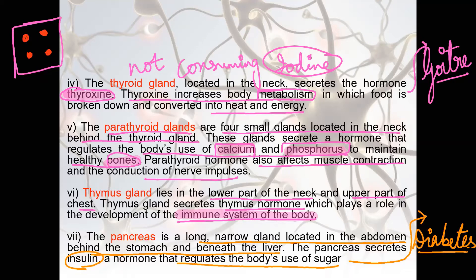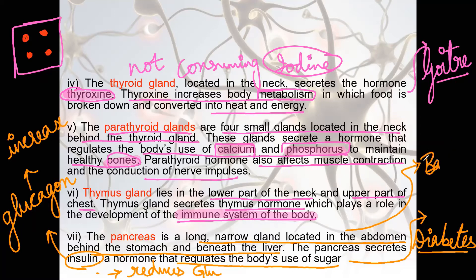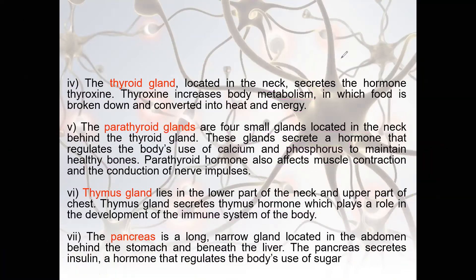Apart from insulin, the pancreas also releases one more hormone known as glucagon. Insulin reduces glucose, whereas glucagon increases glucose — but the function of both is to balance glucose concentration in blood, either by increasing or reducing it. If the amount of glucose is much higher in the body, insulin is produced; if the glucose level drops, the pancreas releases glucagon. The disease related to this is diabetes.